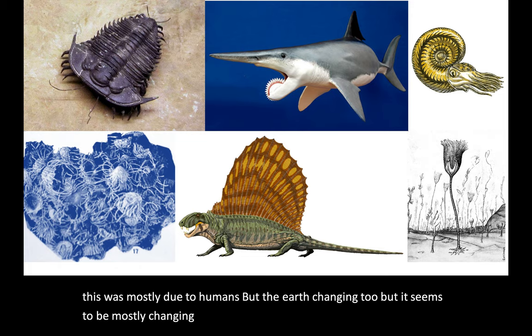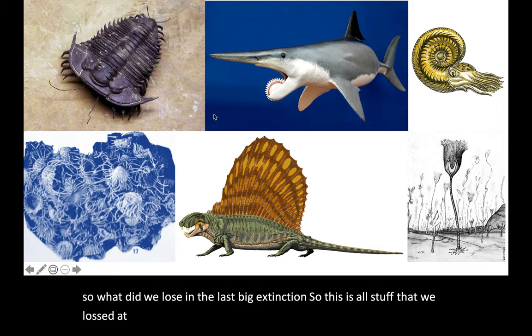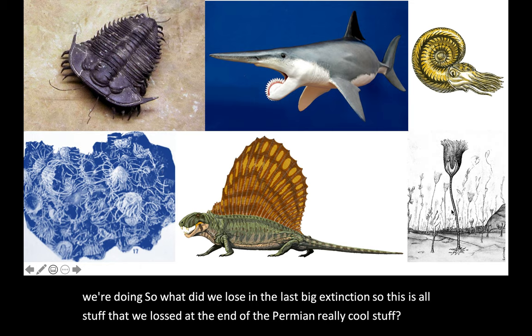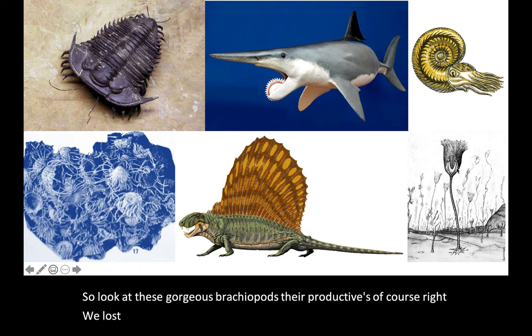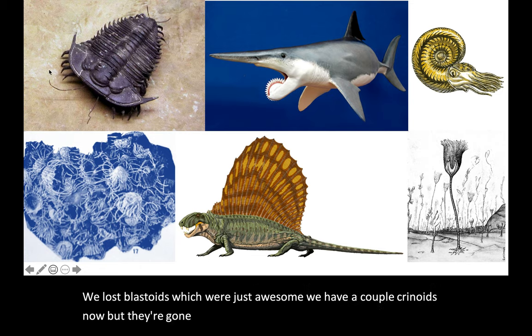So what did we lose in the last big extinction? This is all stuff we lost at the end of the Permian — really cool stuff. Look at these gorgeous brachiopods; those are productids. We lost blastoids, which were just awesome. We have a couple of crinoids now, but they're gone. We lost the last trilobites.